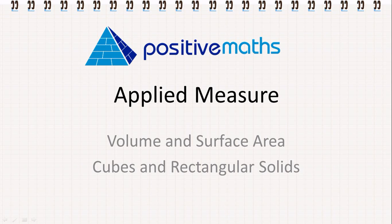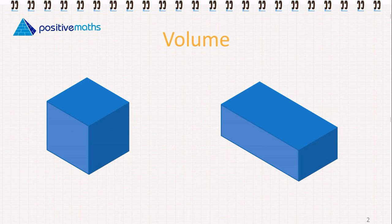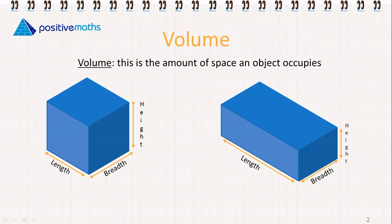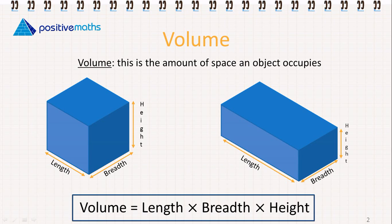In this video for Positive Maths, we're going to learn about the volume and surface area of cubes and rectangular solids. So first to recap, volume is the amount of space an object occupies. To find the volume for shapes like these, we need to first identify the length, the breadth, and the height. The breadth can sometimes be called width as well. So the volume is equal to length multiplied by breadth multiplied by height.